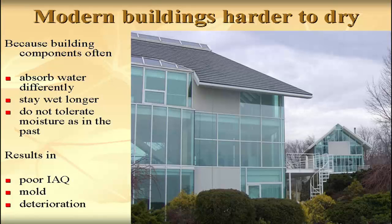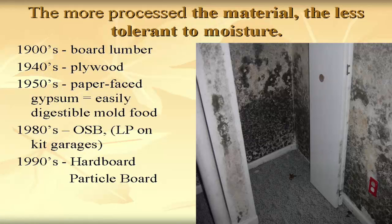Modern buildings are much harder to dry. They absorb water differently, stay wet longer so mold can grow, and don't tolerate moisture as they did in the past. You end up with poor indoor air quality, mold, and deterioration. The more processed a material is, the less tolerant it is to moisture. In the 1900s, 100-year-old board lumber had a hard time growing mold. Then came plywood, which almost always gets mold. Then gypsum board with paper backing — mold loves that. Then OSB, which when wet can grow a lot of mold.